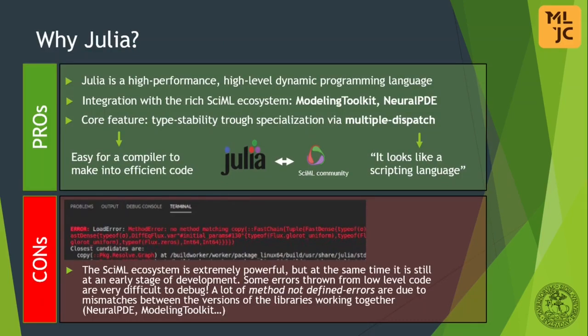To develop our PINNs model, the natural choice for the language is Julia. Its high performance, together with a high-level interface, makes it easy to create complex models in a simple yet performant manner. The ease of use is also possible because of the rich scientific machine learning ecosystem and its community. However, while the SciML ecosystem is very powerful, it is still at an early stage of development. Sometimes errors are difficult to debug and the documentation is not always helpful enough.